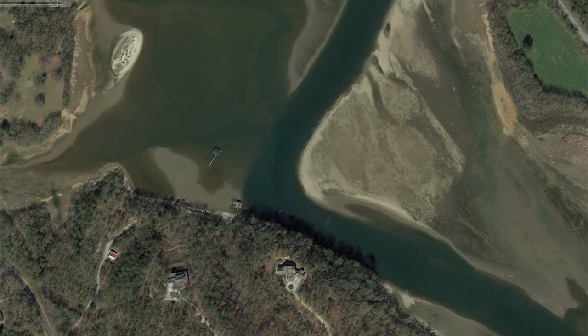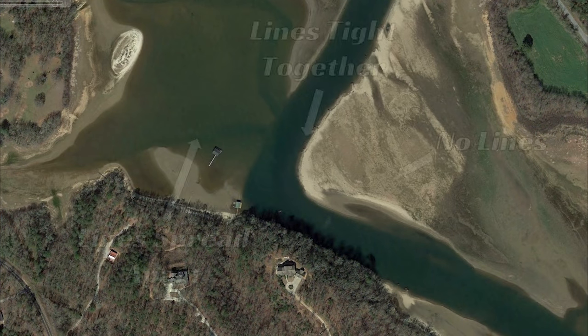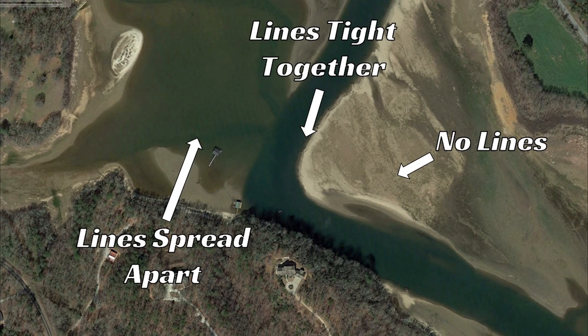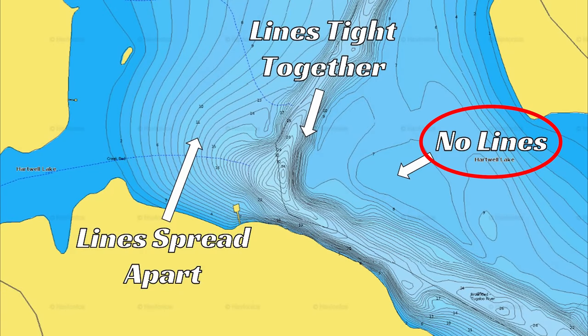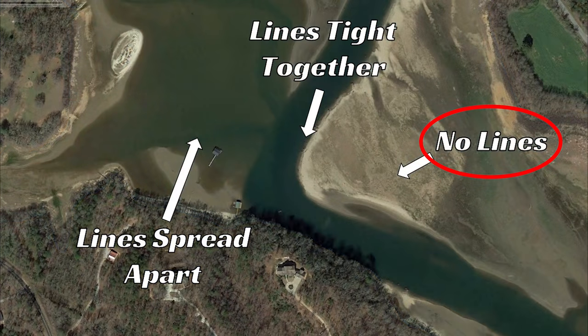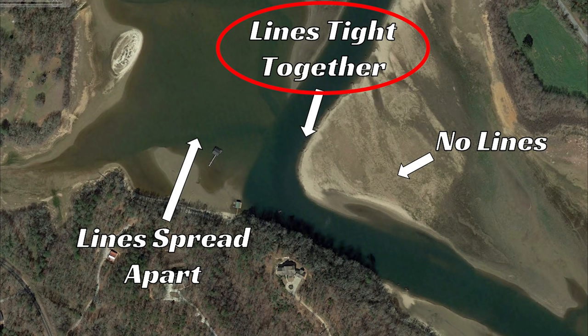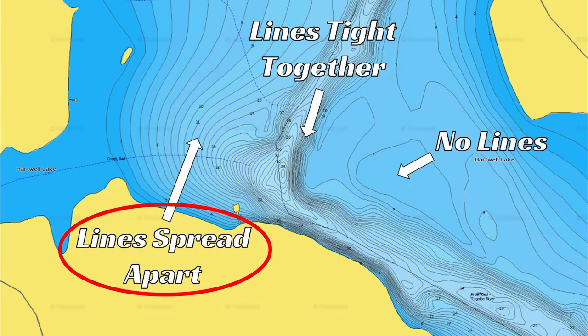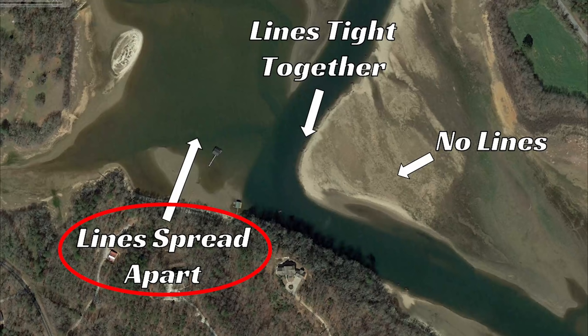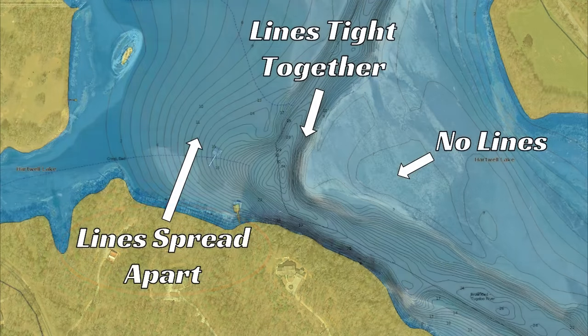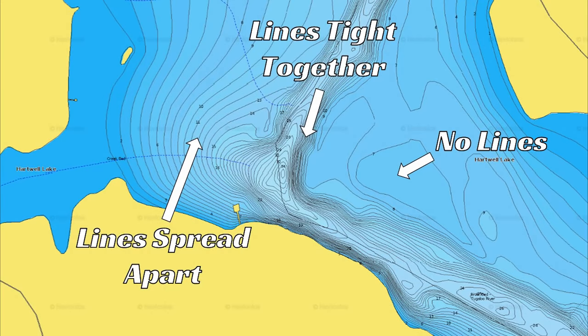Using Google Earth we can look at this lake when it is eight to nine feet low and compare that image to what we see on the contour line map. In the area where there were no lines, the actual bottom is flat with no depth change. Where the lines were tight together, you can see a drastic change — that sharp drop off from shallower to deeper water. And where the lines were spread apart, the water is gradually getting deeper over a long distance. Hopefully we're now on the same page about how to interpret a contour map.